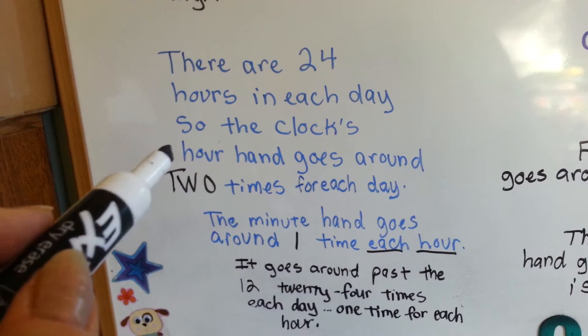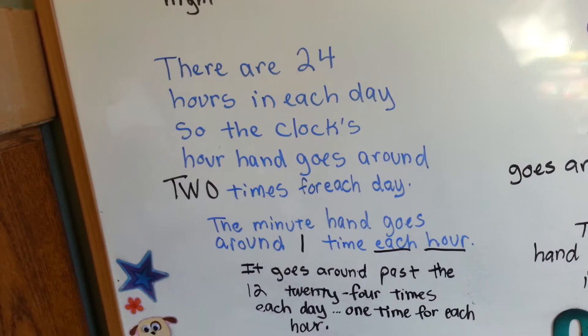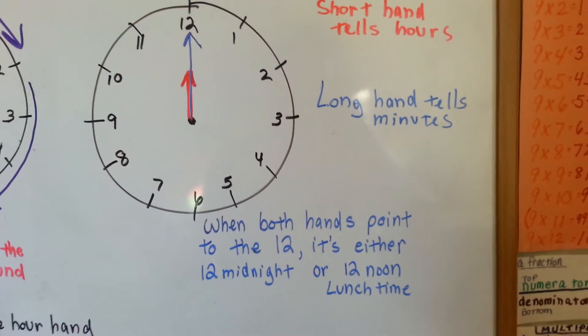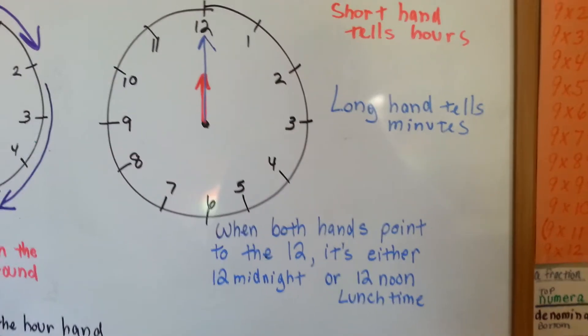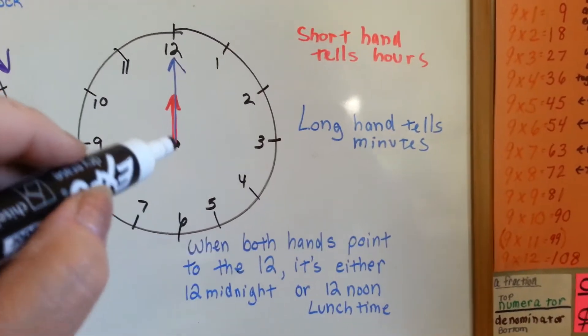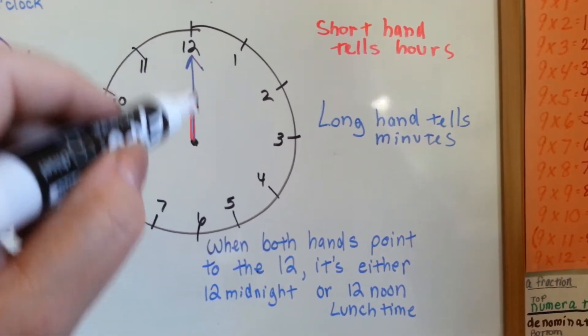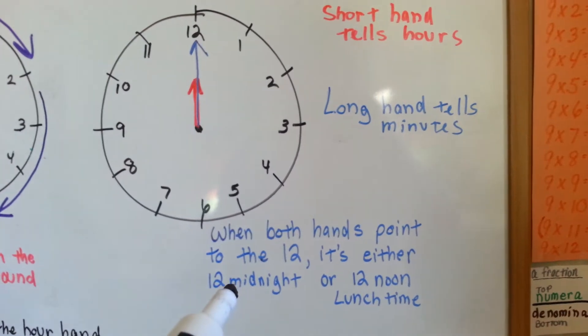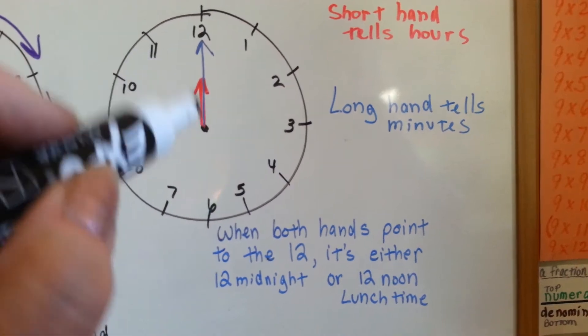The hour hand goes around past the 12 two times. It goes around when it's midnight and 12 noon lunchtime. So here, we have the hour hand and the minute hand both pointing to the 12. It's either midnight, in the middle of the night when you're in bed sleeping, or it's 12 noon lunchtime.